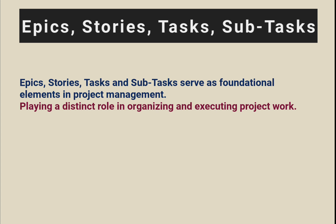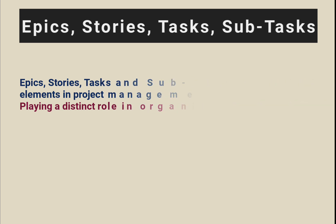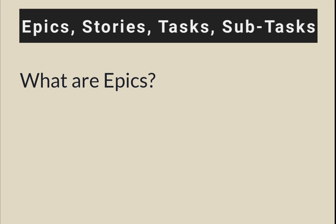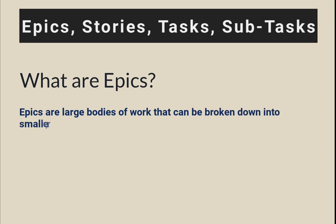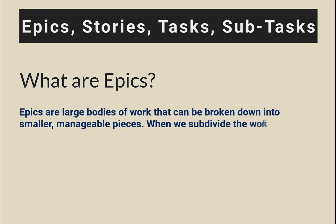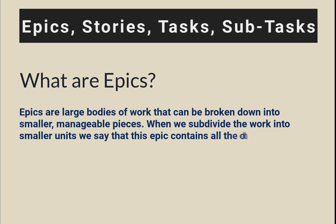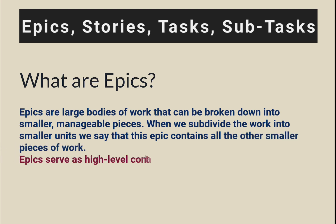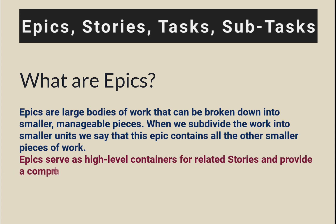I will now discuss each of these components in detail to get a comprehensive understanding. Epics are large bodies of work that can be broken down into smaller manageable pieces. When we subdivide the work into smaller units, we say that an epic contains all the other smaller pieces of work. Epics serve as a high-level container for related stories and provide a comprehensive view of project progress and goals.